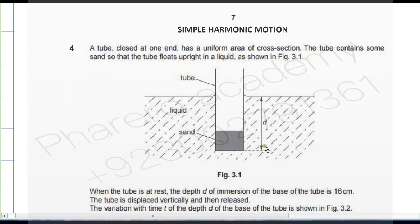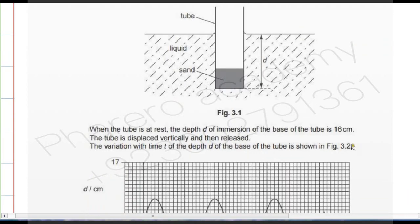The tube is displaced vertically and then released. This is the mean position — the equilibrium position about which the tube oscillates.